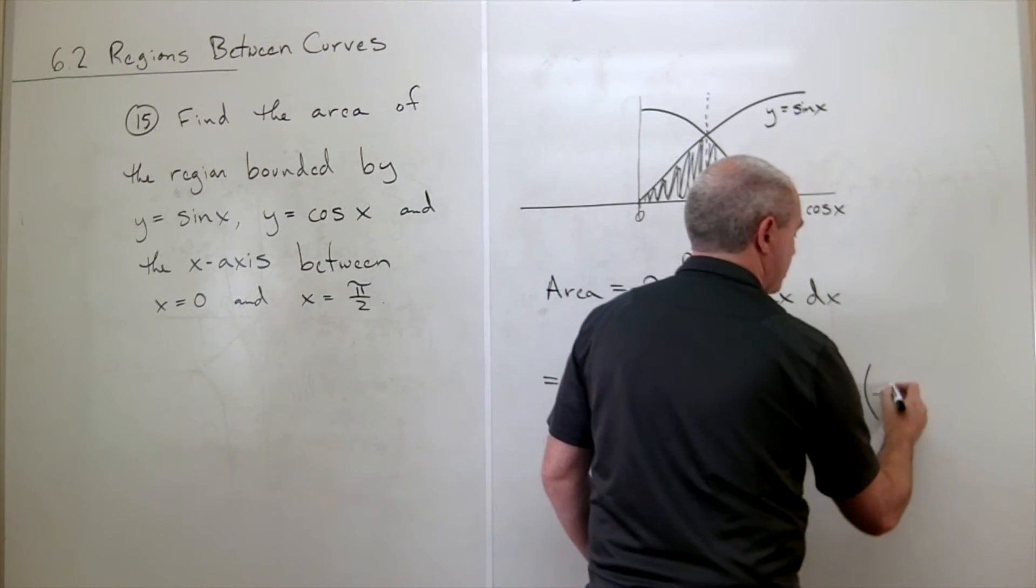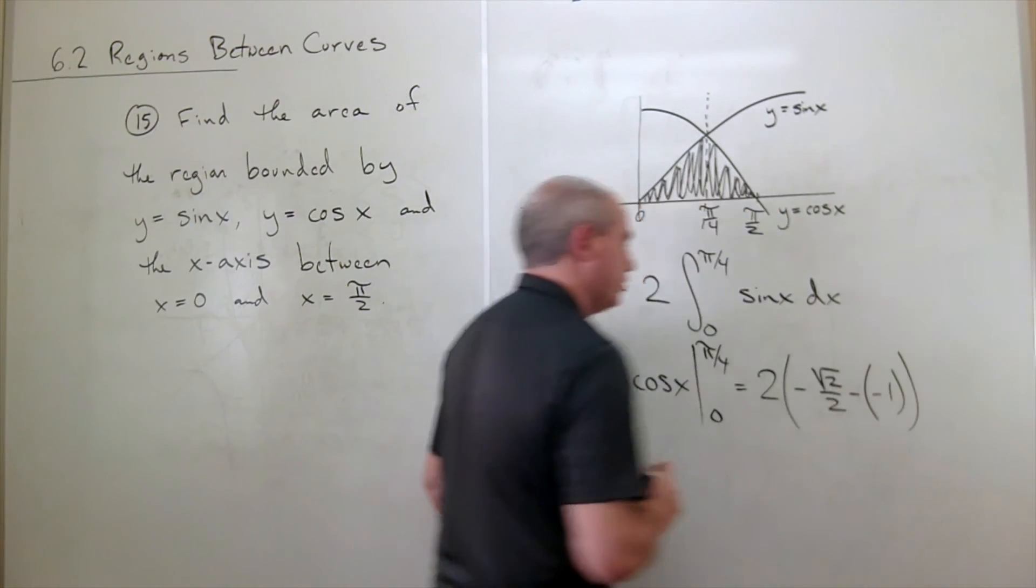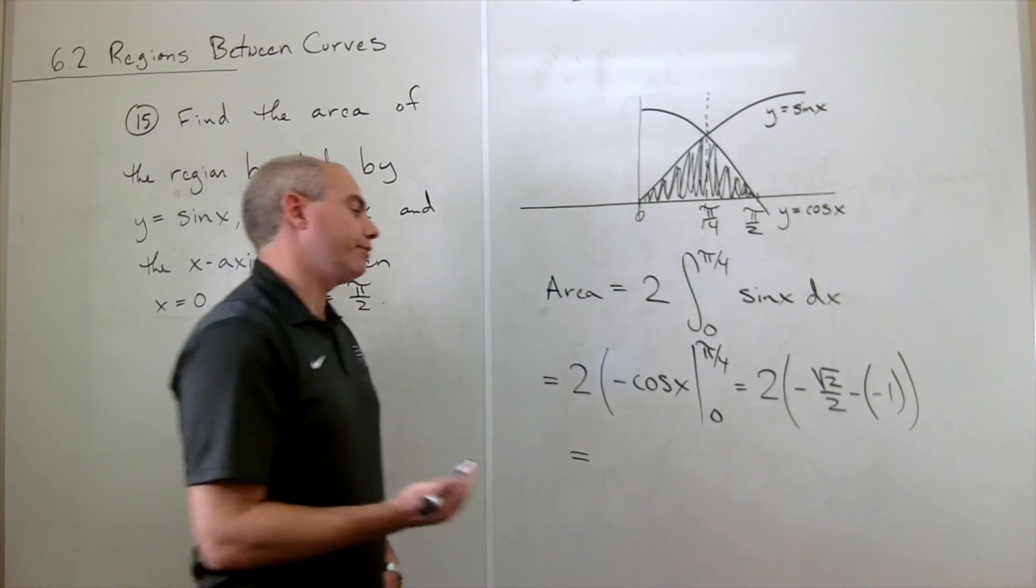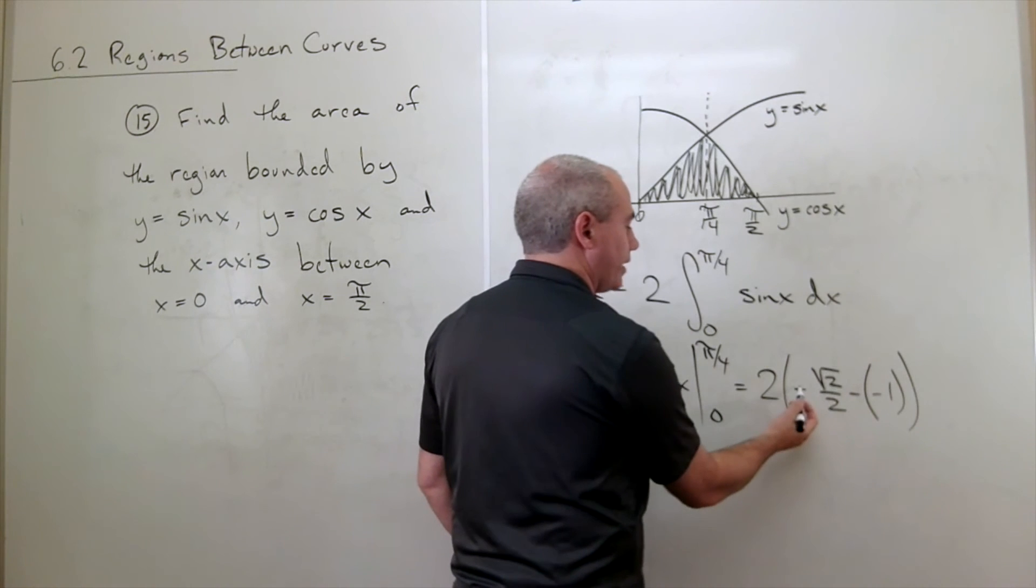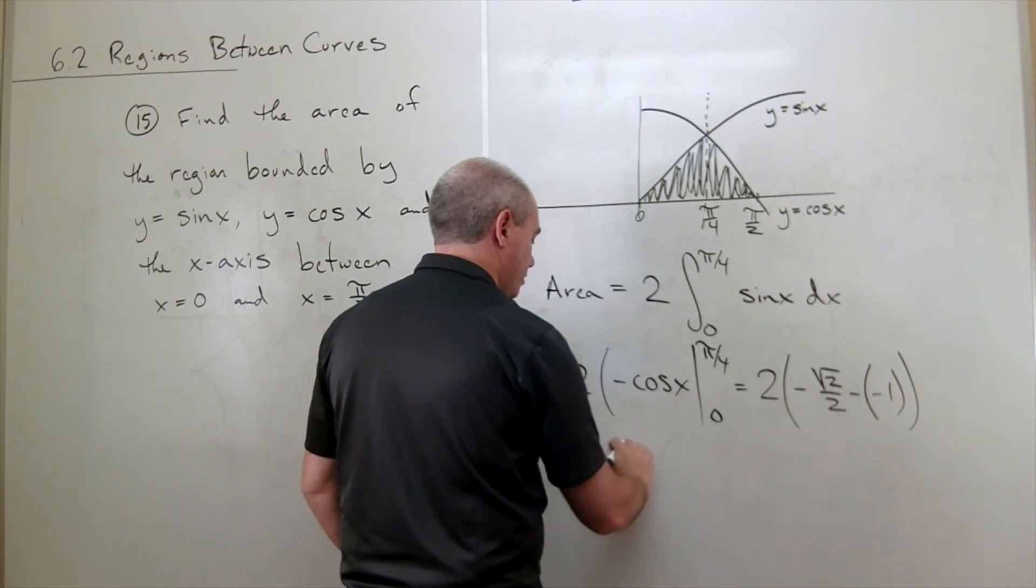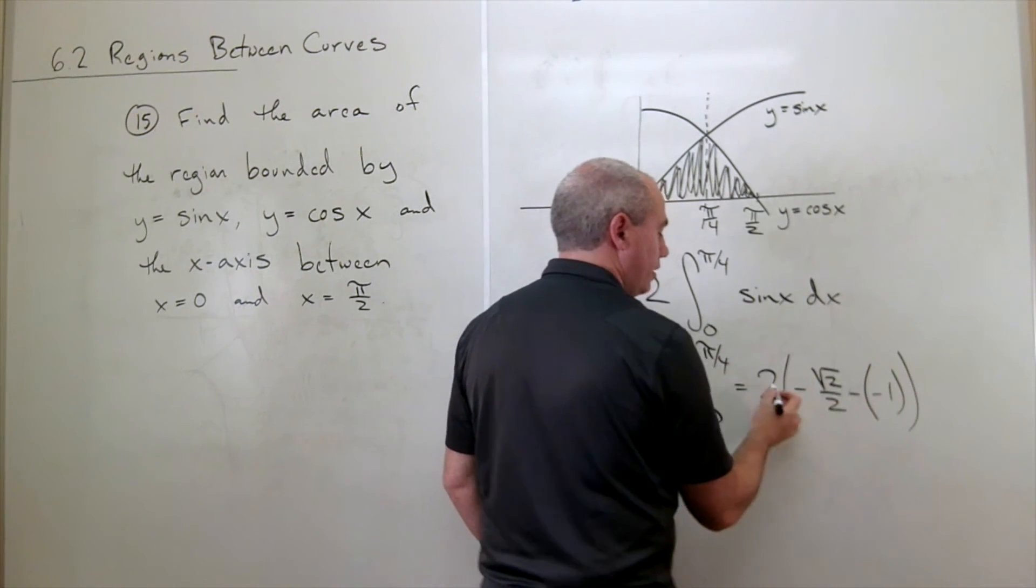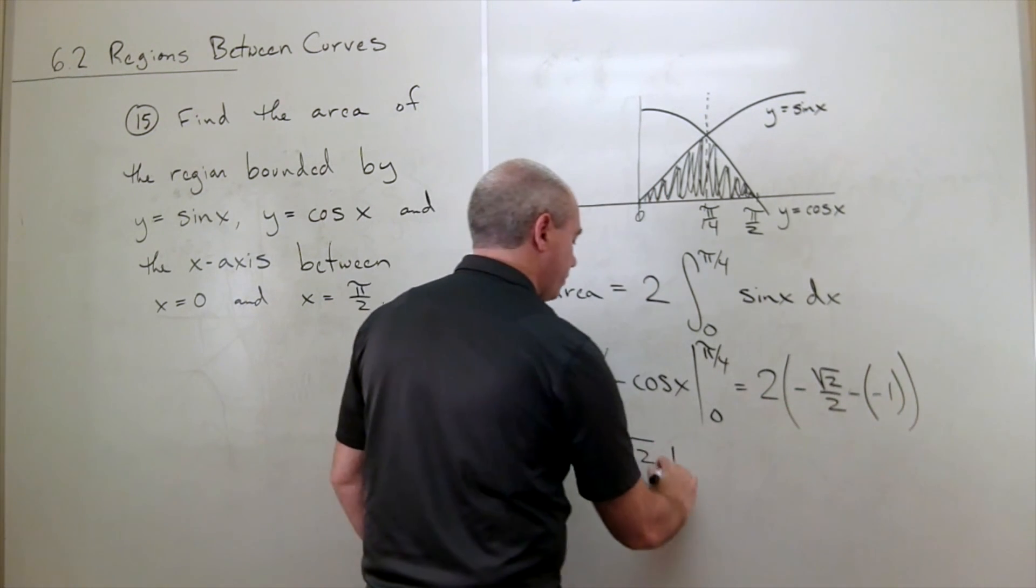So minus 1 goes in here. At this point, I get multiplied through by the 2, and I get minus root 2, and then this is positive 1 times 2, which is plus 2.